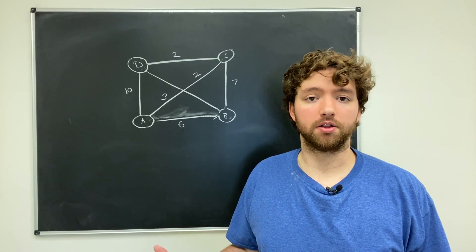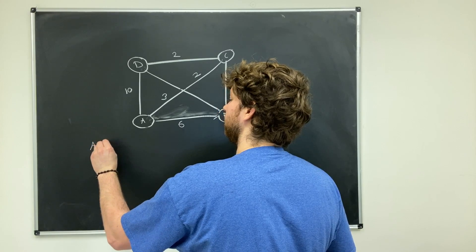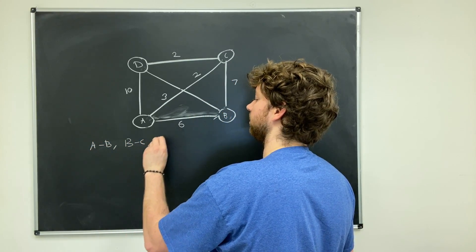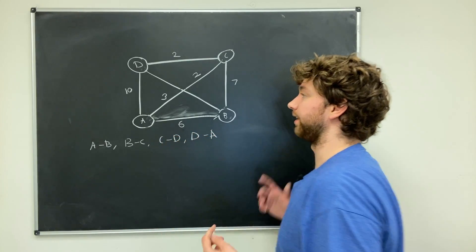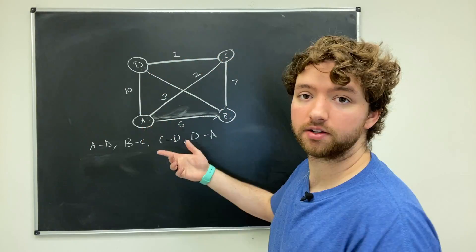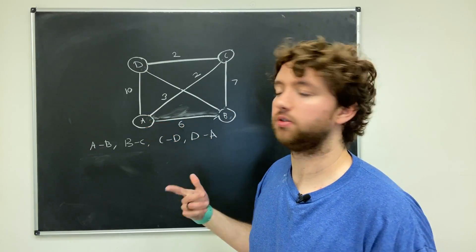So let's go through all of the different possibilities starting at A. Well, we could go A to B, and then B to C, C to D, and then D back to A. That's the first example. We're just going to leave out the same path going in the opposite direction. So that was the first path, just going in a counterclockwise circle essentially.